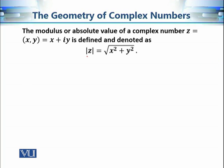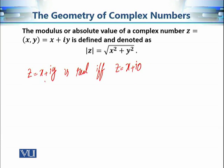If we restrict this to the set of real numbers, a complex number z equals x plus i·y is real if and only if z equals x (i.e., y equals 0). Using this definition, the modulus of x — when z equals x plus i·0 — is the square root of x squared, which is the same as the absolute value of x. This matches the standard definition of absolute value from the real numbers.